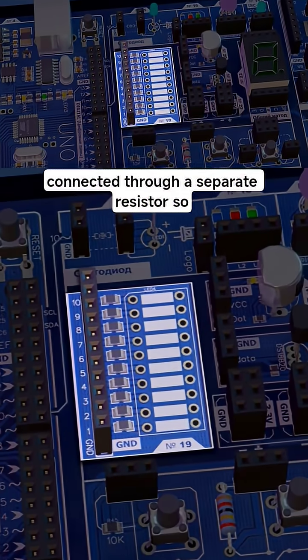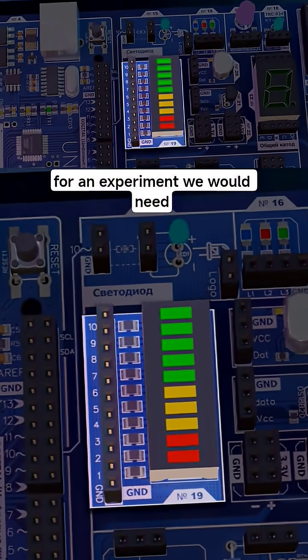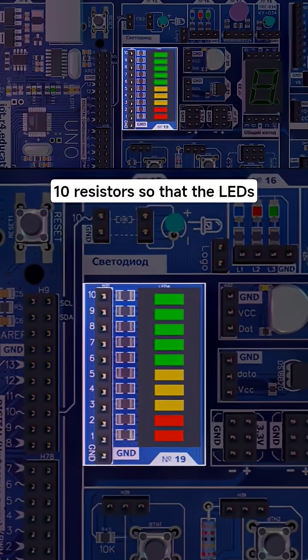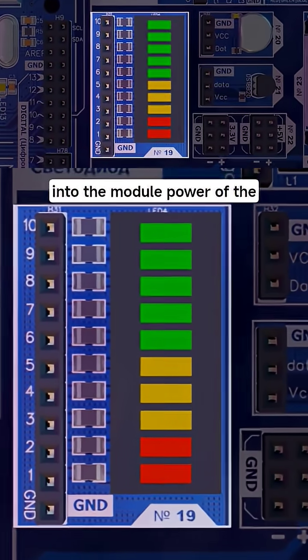Each LED of the scale is connected through a separate resistor. For an experiment, we would need 10 resistors so that the LEDs do not burn out. However, in our case, resistors are already built into the module.